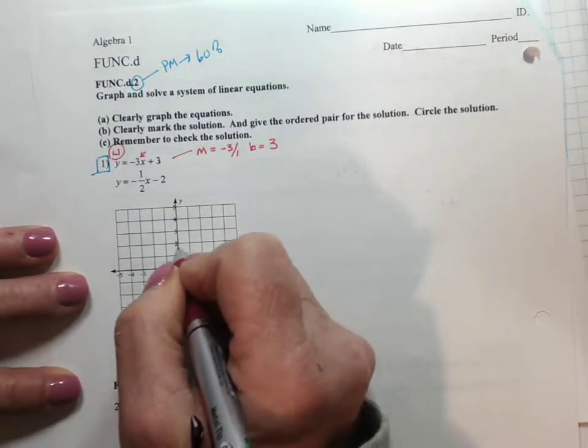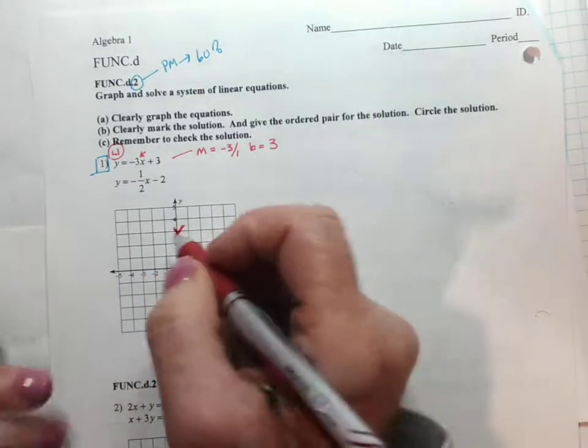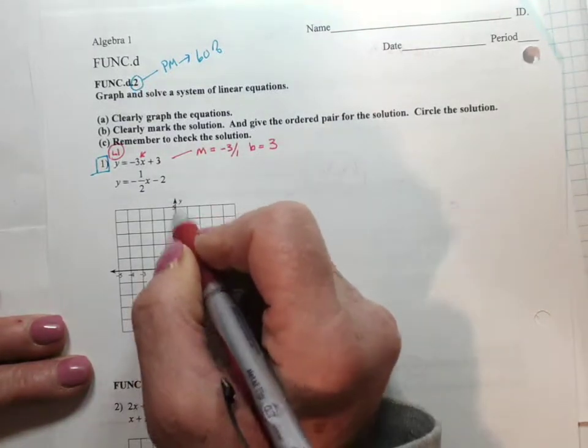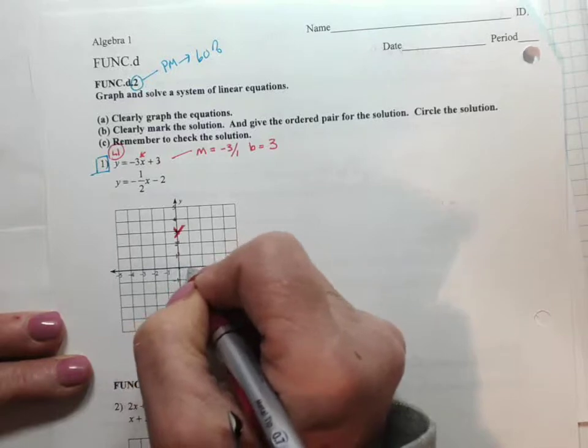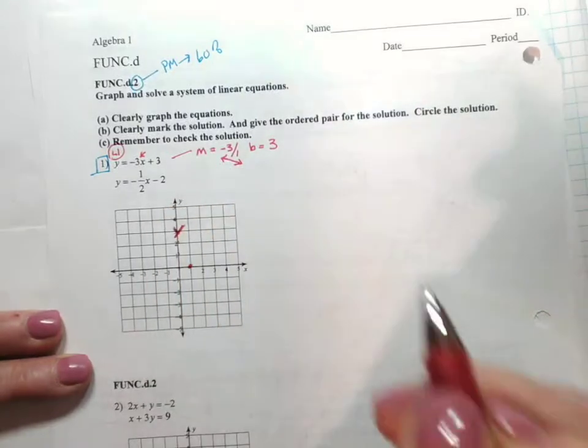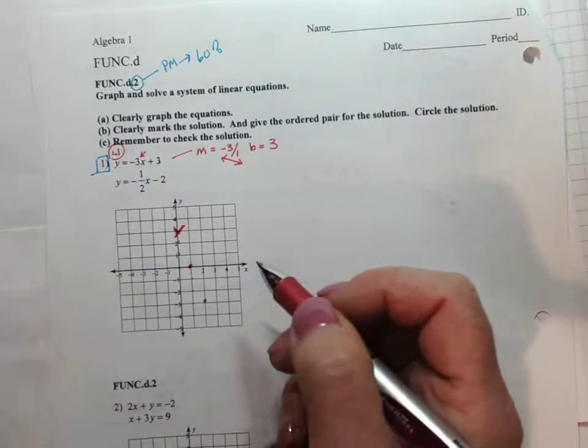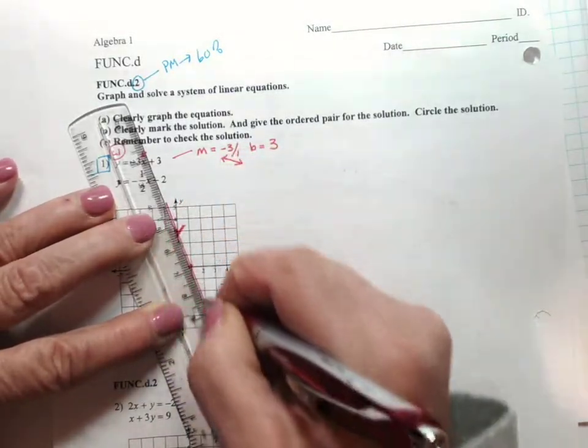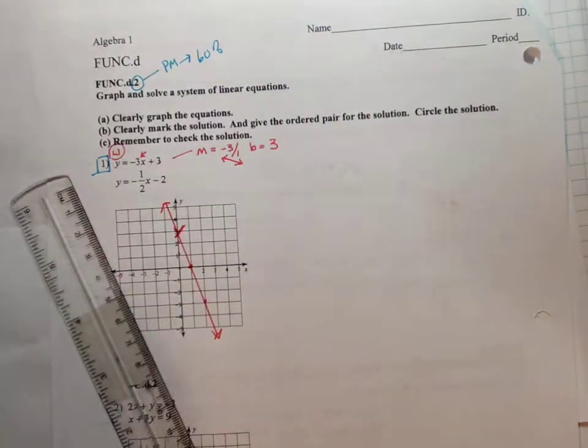So we graph the y-intercept. The y-intercept is at 3. The slope is negative 3, so we go up, we can't go up, so we're going to go down 1, 2, 3, and we are going to go back 1. Remember, a negative slope should always look like that. Down 3, 1, 2, 3, back 1. And when you're graphing linear systems of equations, make sure to draw a very neat line.